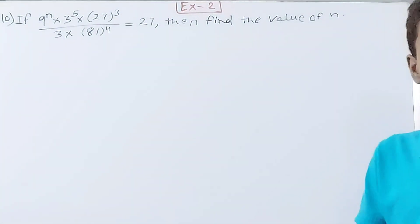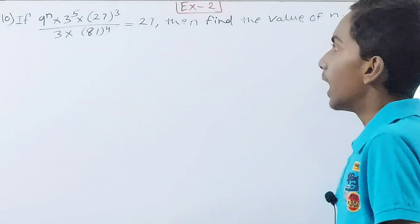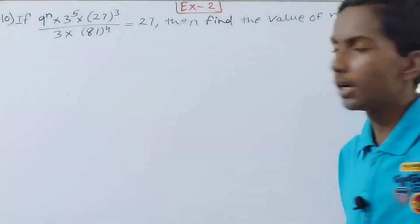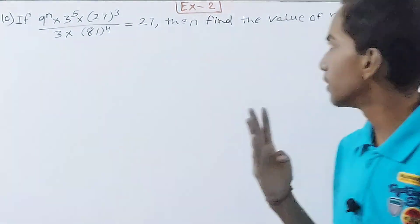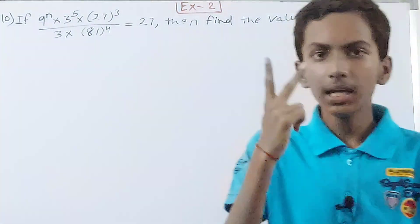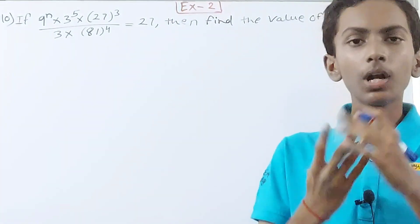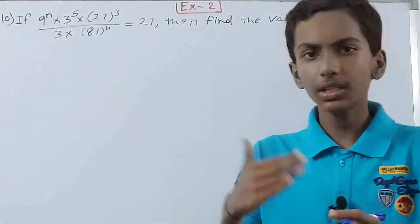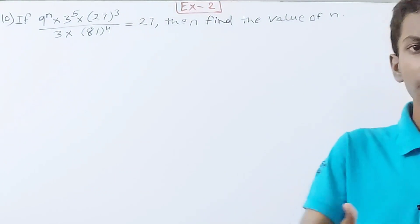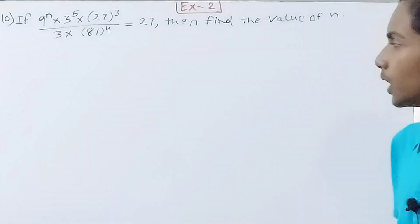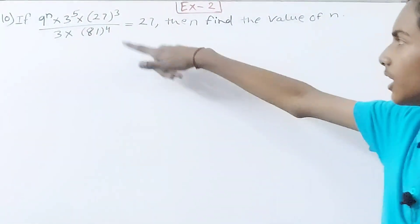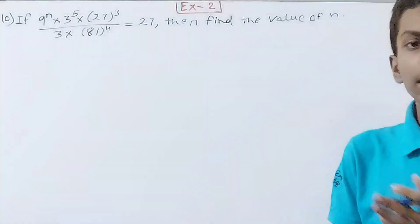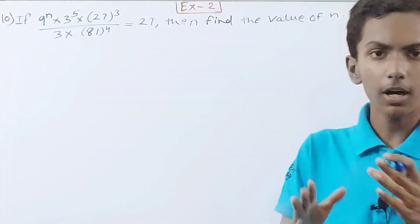First, you can see the bases are 9, 27, 81, and 3 — so four different bases. Can we represent all four in the same base? Yes — the base is 3, because all these numbers are results of powers of 3: 3 squared is 9, 3 cubed is 27, and 3 to the power of 4 is 81.